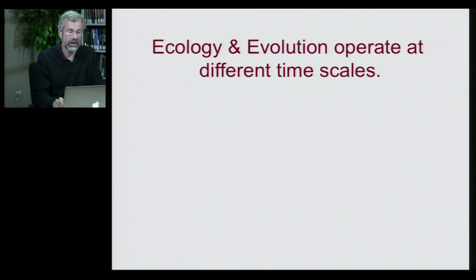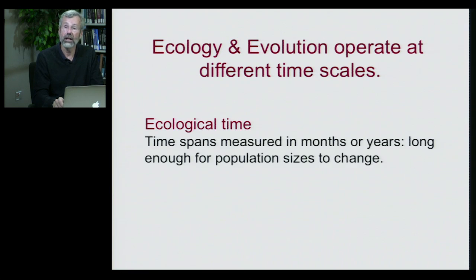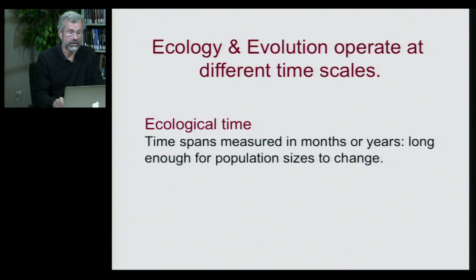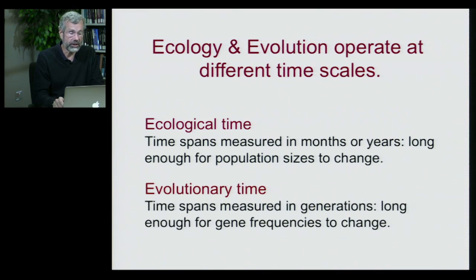Before we look at population ecology in more detail, I want to stop for a minute and contrast two different time scales. Ecology and evolution operate at very different time scales. Ecological time refers to time spans measured in months or years — just long enough for a population size to change. Evolutionary time involves time spans measured in generations, long enough for gene frequencies in a species to change.